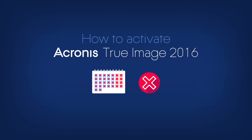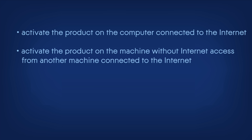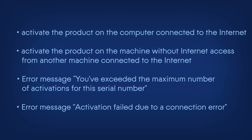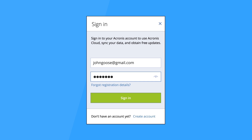In this video, we will look at how to activate the product online using your computer, activate the product on an offline machine using another machine that is connected to the Internet. We will also review the two most common activation problems and ways to solve them: the error message 'You've exceeded the maximum number of activations for this serial number,' and the error message 'Activation failed due to a connection error.'